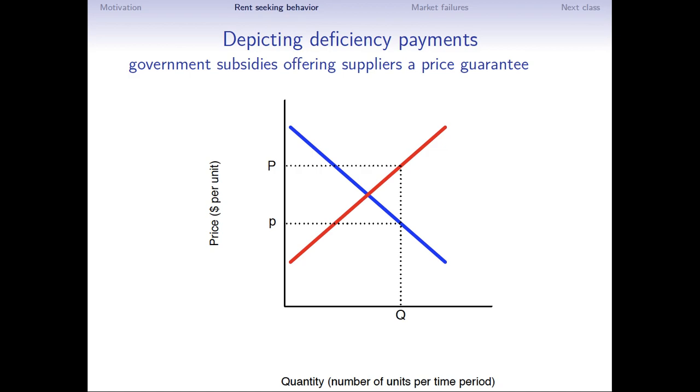Finally, deficiency payments are subsidies. This is a type of price guarantee, as I suggested last day. The government says to the producers, go ahead and produce as much as you would as if the market price was P. Take that and put it on the market, and then sell it for whatever you can get. And you would read that off the demand curve. The willingness to buy quantity Q on the behalf of consumers is just P. So the producer earns this much from the sale of the commodity. And then the government says, and it all gets sold. And then the government says that we will reimburse you with a subsidy of this much. So that your total revenues are as if the price was P.